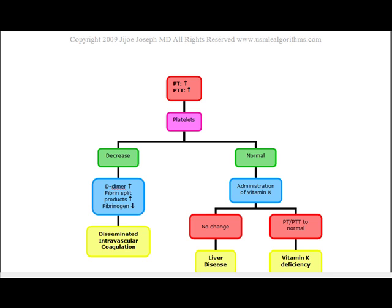DIC is usually resulting from some type of underlying illness, usually sepsis. It can also happen secondary to things such as cancer, hemolysis from transfusion reactions, serious burns, rhabdomyolysis — which they like asking about a lot — as well as trauma and snake bites. A lot of things can cause DIC.